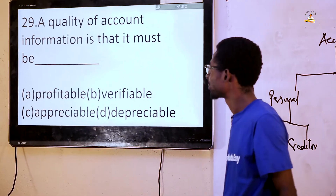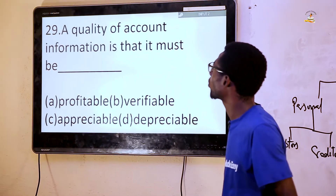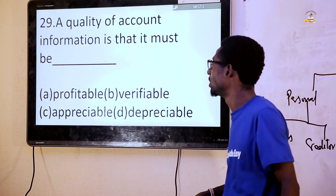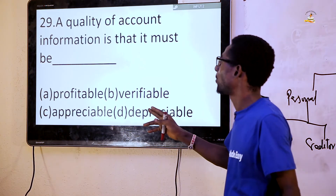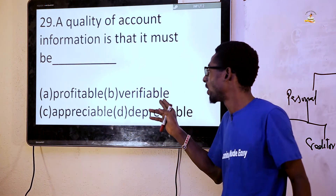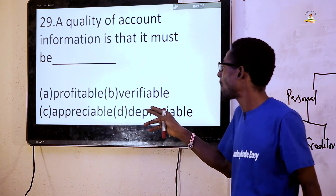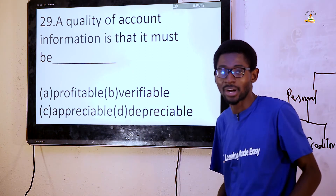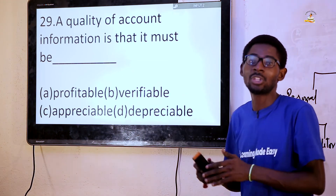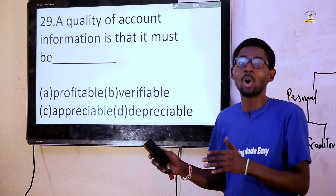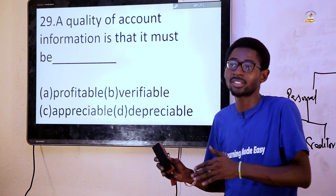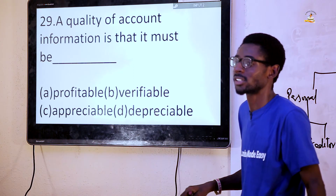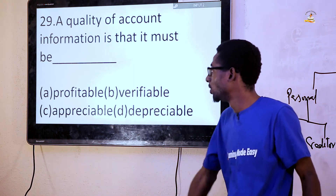Question 29: A quality of accounting information is that it must be — A: profitable, B: verifiable, C: appreciable, D: depreciable. The answer is verifiable. Verifiable means the ability to do auditing — you can check the source documents against the final records. The answer is option B.